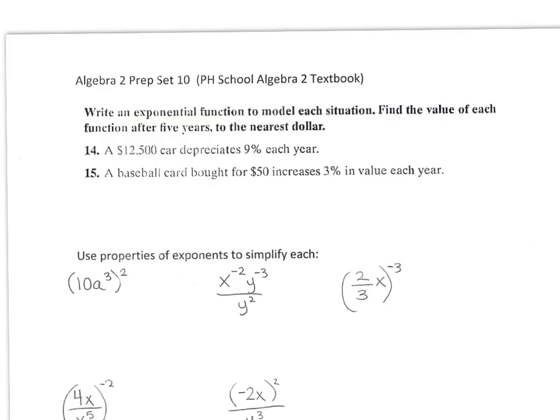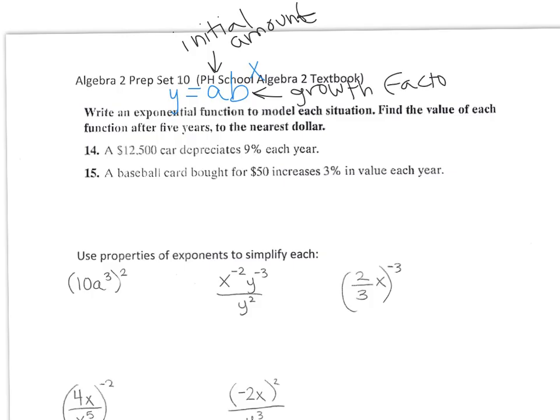This section is about exponents, so write an exponential function. An exponential function looks like this: y equals AB to the x, where A is your initial amount or your y-intercept, and B is your growth factor.